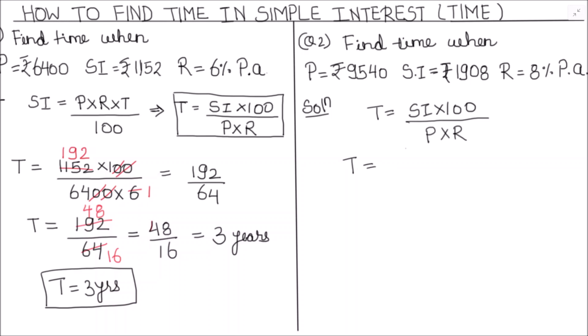Let's substitute the values. This is simple interest which is 1908 times 100 divided by 9540 times rate of interest 8%. Let's solve this. This 0 gets cancelled with this 0.